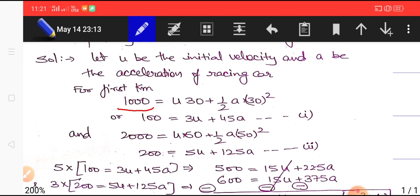For the first kilometer we can apply s = ut + (1/2)at². So one kilometer is 1000 meters, u times t - initial velocity times 30 seconds, plus (1/2)a times 30 squared. We came on the result - after dividing both sides by 10, 100 = 3u + 45a.